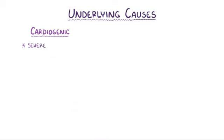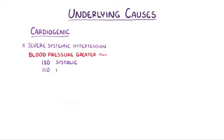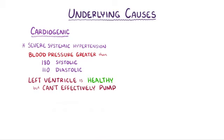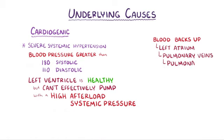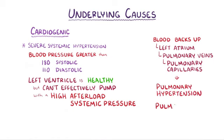Another cardiogenic cause is severe systemic hypertension, specifically a blood pressure greater than 180 systolic or 110 diastolic. In this situation, the left ventricle is healthy but simply can't effectively pump blood in a system with such a high afterload — in other words, under conditions with such high systemic pressures. Once again, blood starts to back up into the left atrium, pulmonary veins, and pulmonary capillaries, ultimately leading to pulmonary hypertension and pulmonary edema.